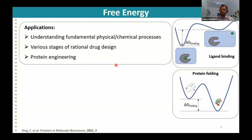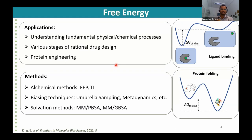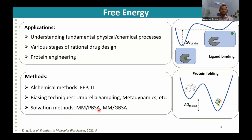There are various ways to calculate free energy using molecular dynamics simulations. Three major widely-known methods are: alchemical methods such as free energy perturbation (FEP) and thermodynamic integration (TI); biasing techniques such as umbrella sampling and metadynamics; and solvation methods like MM-PBSA and MM-GBSA. In this webinar, our focus is entirely on alchemical methods.